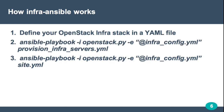How InfraAnsible works: you define your OpenStack Infra stack in a YAML file. You put global values specific to your environment, like your domain name, your key name to deploy instances in your OpenStack cloud, and the location of the system-config Git repo in case you have a fork and don't want to use the upstream repo. The YAML file also contains a stanza for each of the servers for the OpenStack Infra — like Nodepool, Gerrit, and so on. Each stanza contains information about how to bring up those instances: flavor, Glance image, hostname, and that kind of stuff.